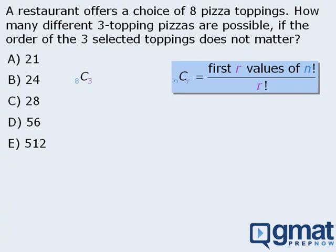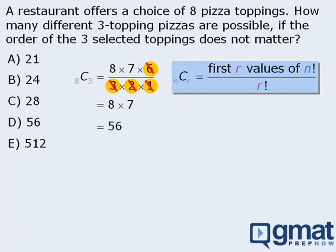In this question, we're choosing three items out of eight. So the numerator will be the first three values of eight factorial — that is eight times seven times six — and the denominator will be three factorial, which is three times two times one. Notice that the denominator evaluates to six, and we have a six in the numerator, so we can cancel these out, leaving us with eight times seven, which equals 56. So we can select three items from eight items in 56 ways, meaning the correct answer is D.